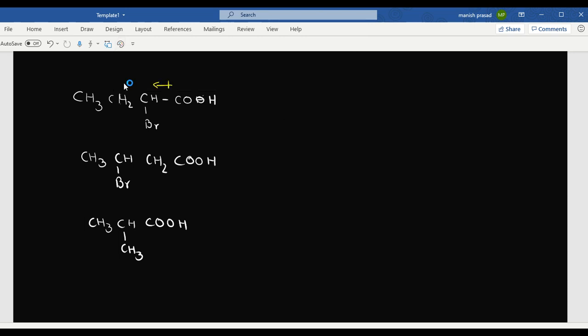Bromine has withdrawn electrons here, so electron withdrawal happened here and here electron donation happened. Now when electrons are withdrawn, the electron density on C double bond O negative becomes less, which means the bond with H plus becomes weak. Now bromine is far away here, so the electron density will be less but not as much as above, so the bond with hydrogen will be stronger.